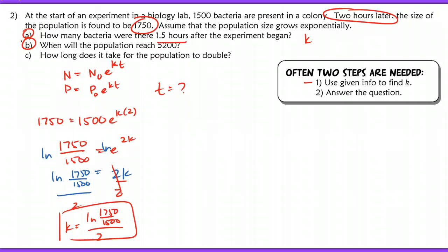Part C says, how long does it take for the population to double? We're going to assume that that would be 3,000, right? And we start off with 1,500. We know our growth constant. I'm just going to remind you that we already know K, but we do not know T. If I wanted to solve for T and isolate that, I would divide out that 1,500, and I'm going to be left with 2. So I have 2 equals E to the KT.